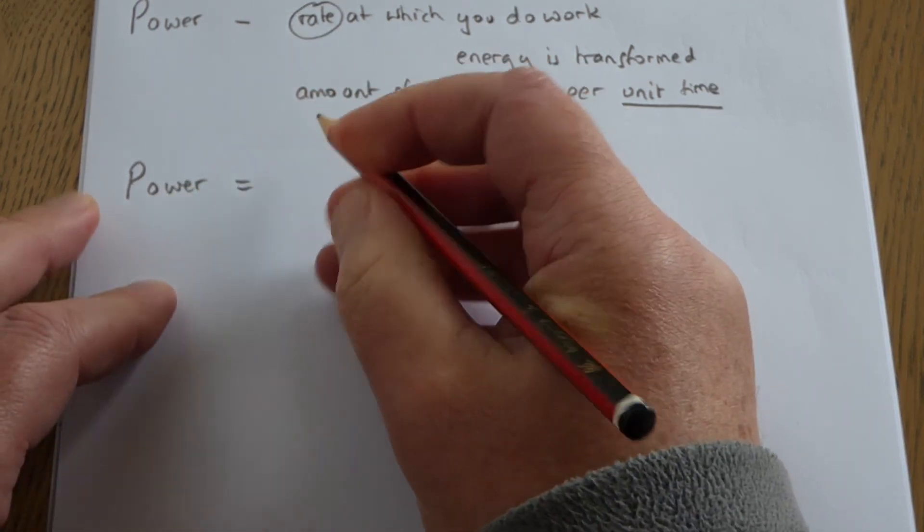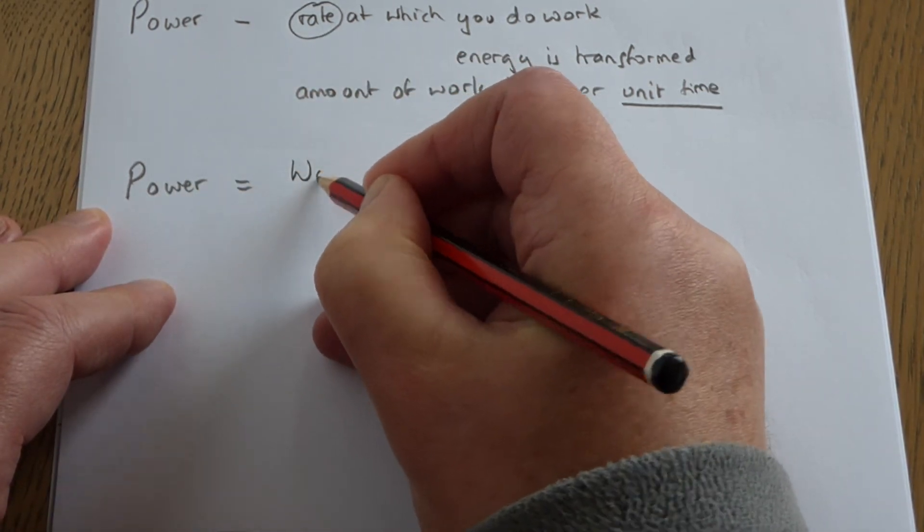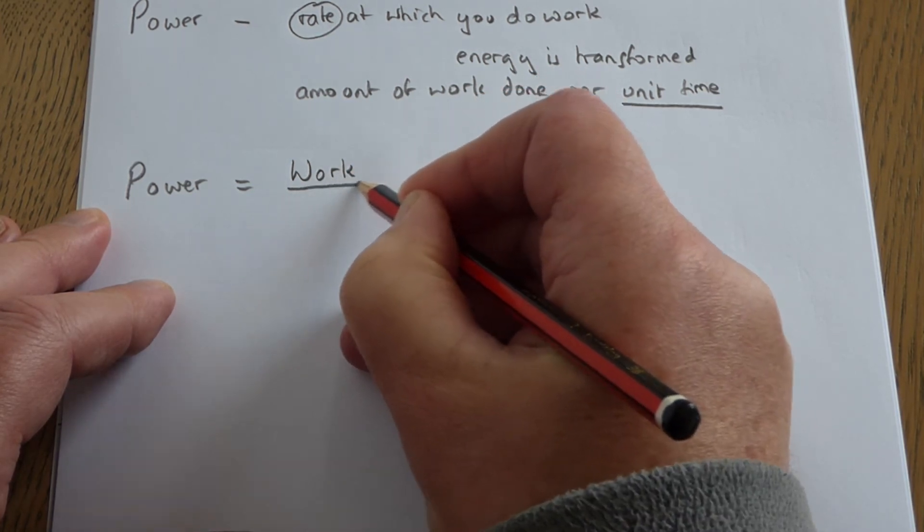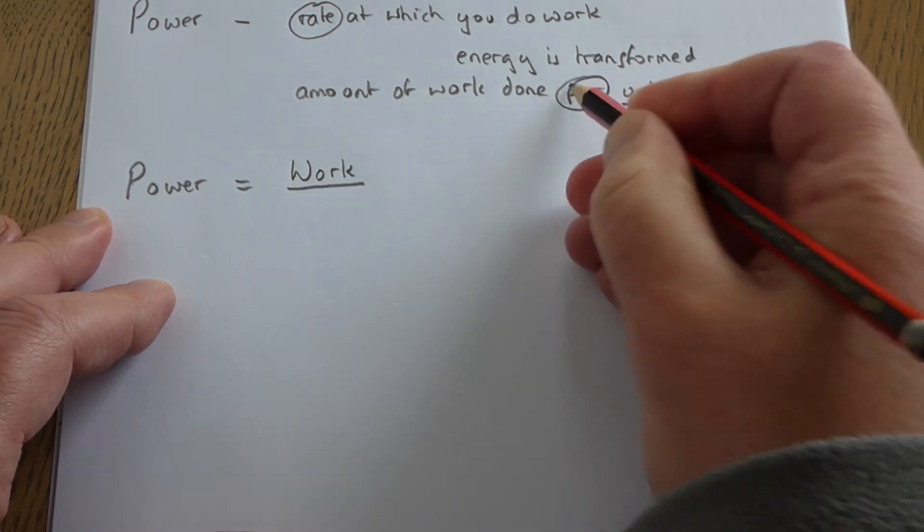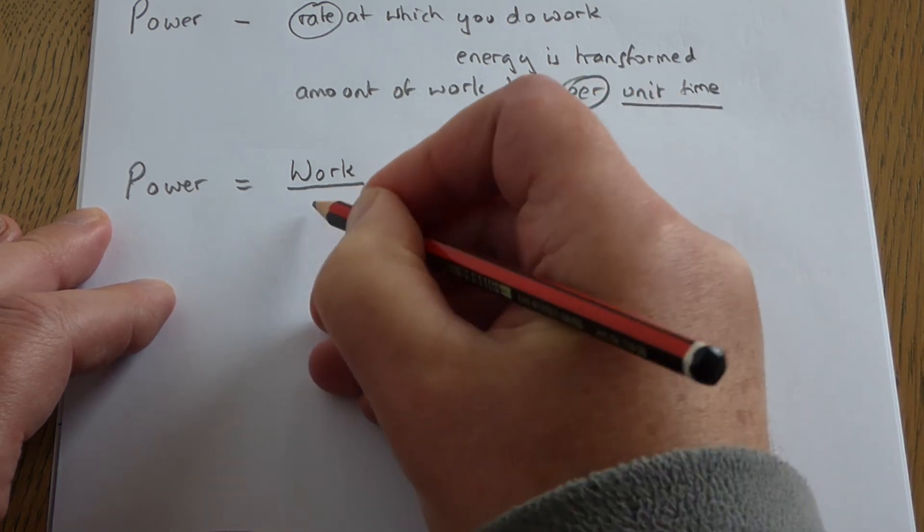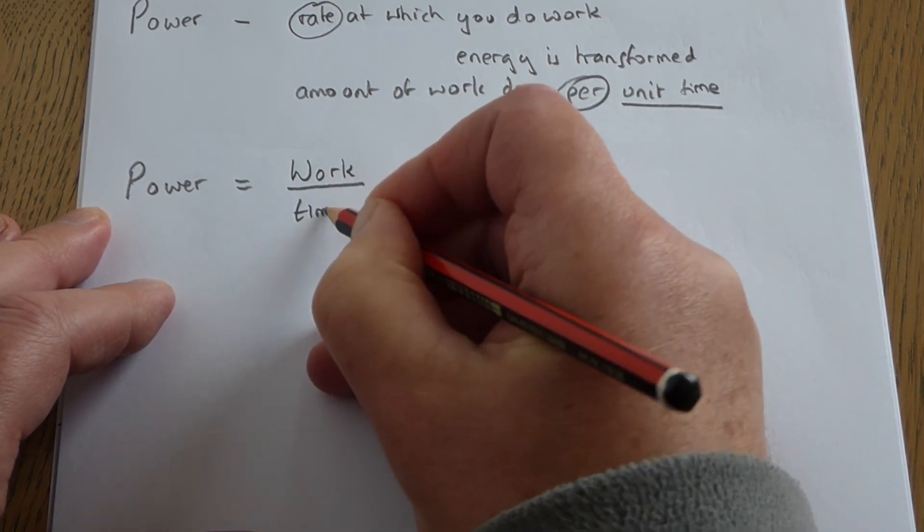...is going to be the work you do. You then divide - that will be the word 'per' - and you divide by how long you took to do the work.